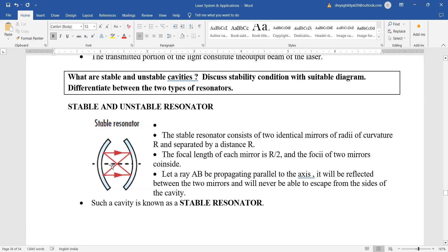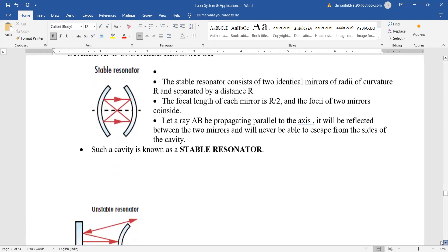Focal length of each mirror is R by 2 and all arrangements have been made so that minimum light escapes from the sides of the cavity. Such a cavity is known as a stable resonator.